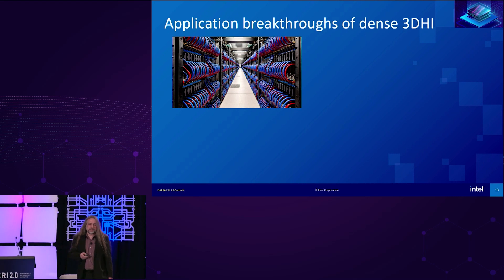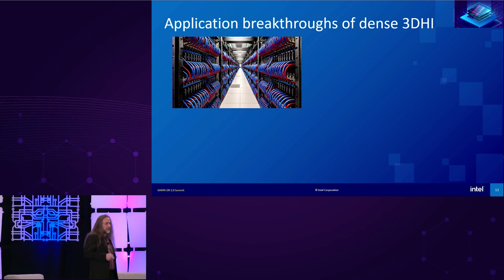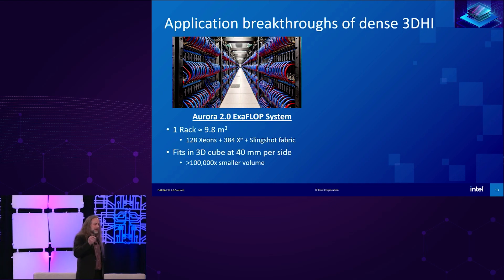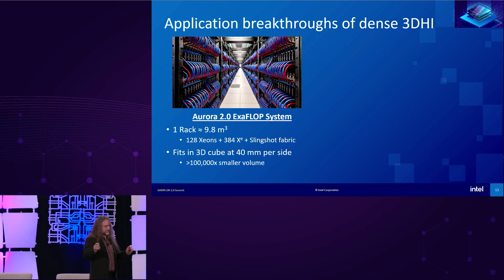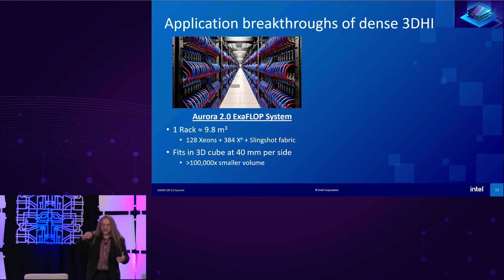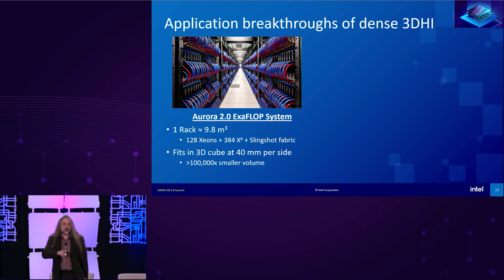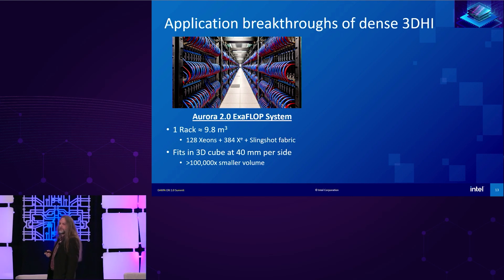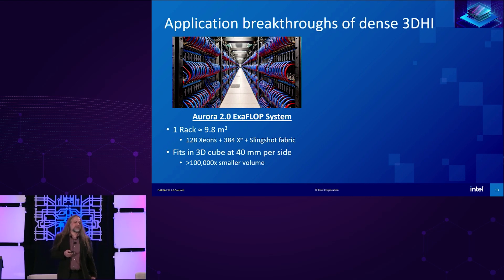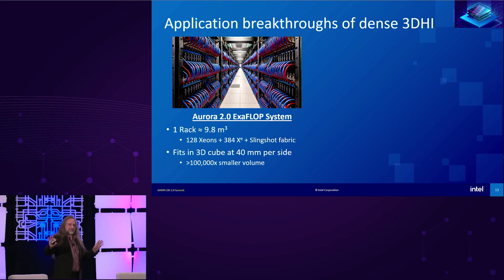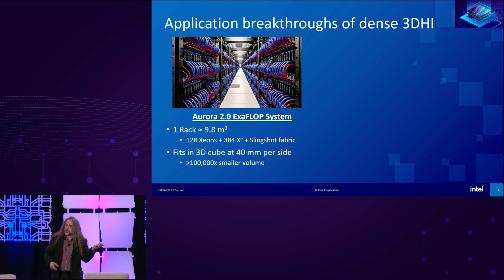Why would you want to do this? Here's a quick example. Looking at the Aurora 2 exascale supercomputer coming online at Argonne National Lab — a very large system, takes a lot of power. Each rack of Aurora takes about 9.8 cubic meters of space for the entire compute volume. If I were to apply these techniques, I could shrink all of the silicon in that rack to a cube of roughly 40 millimeters on the side — over a 100,000x reduction. Imagine petaflops and enormous memory at an insane level of performance. I can't tell you how to cool it or power it — that's a DARPA-hard problem — but if you could build that stack, what would you do with it?